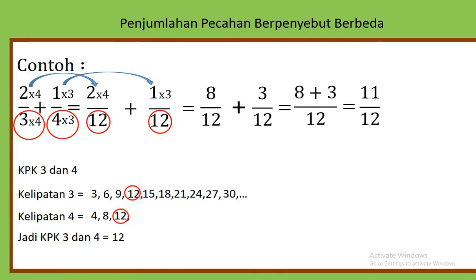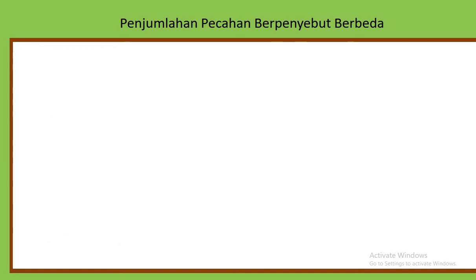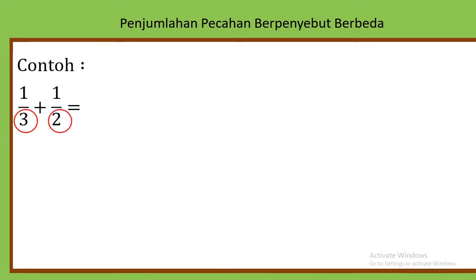Begitu caranya ya anak-anak. Sudah paham kira-kira? Contoh berikutnya, sekarang 1 per 3 ditambah 1 per 2. Perhatikan, yang lingkaran merah itu penyebutnya berbeda bukan, antara 3 dan 2?